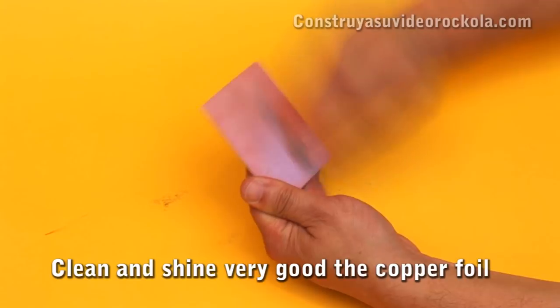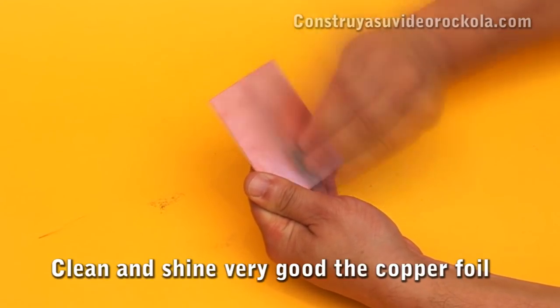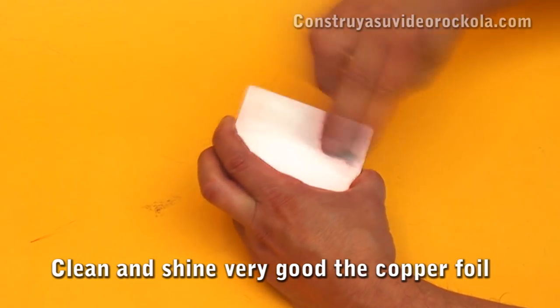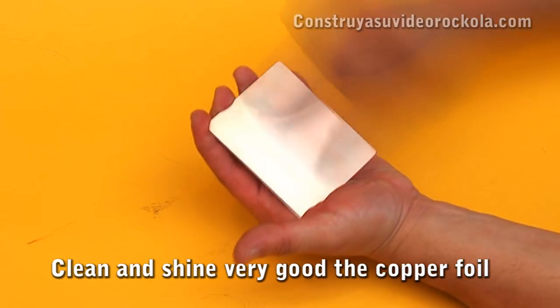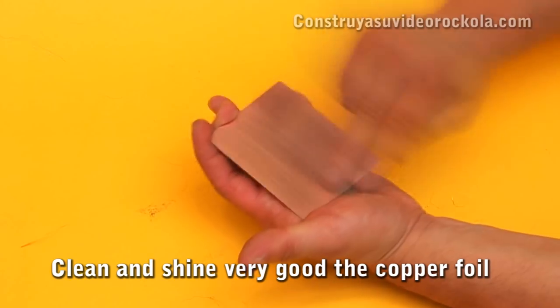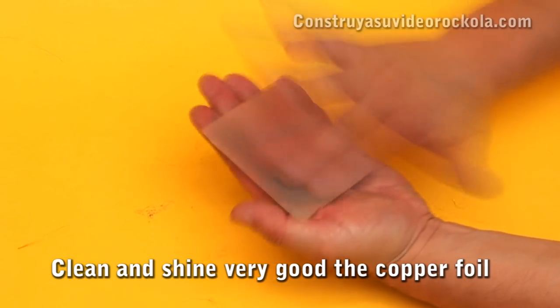We wash the bakelite with soap and water degreaser. Then, with a steel wool pad, we shine the copper until it is spotless without any fingerprints or grease. This is very important for good adhesion of the design on the bakelite.